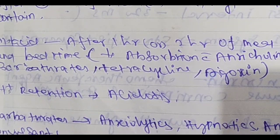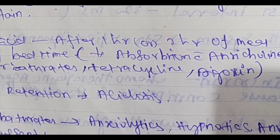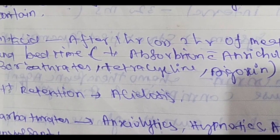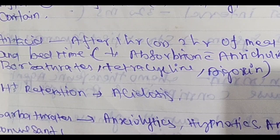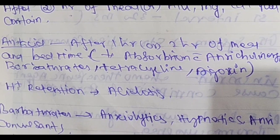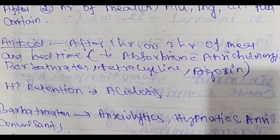Antacid is usually given after one hour or two hours of the meal. Antacid — specifically aluminium hydroxide — should be taken after one hour or two hours of the meal and at bedtime. Decreased absorption occurs with anticholinergics, barbiturates, and tetracycline.